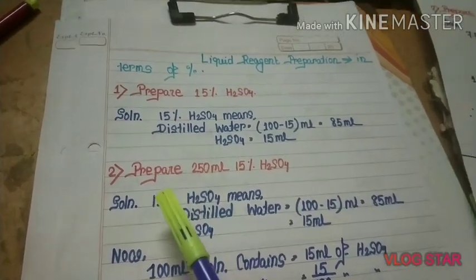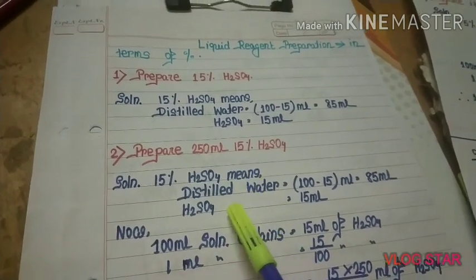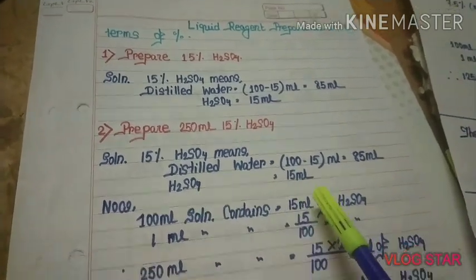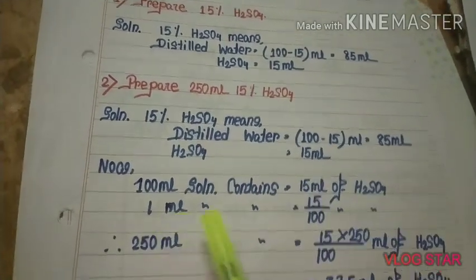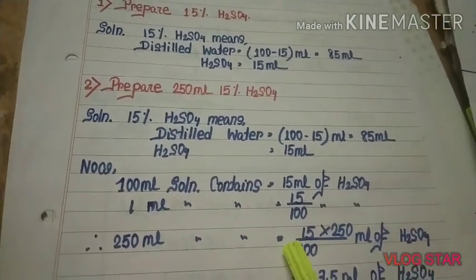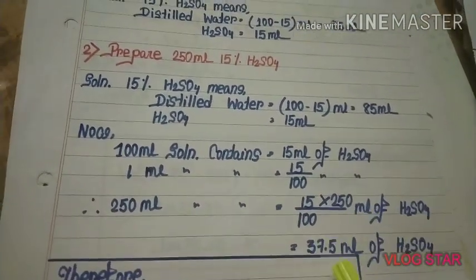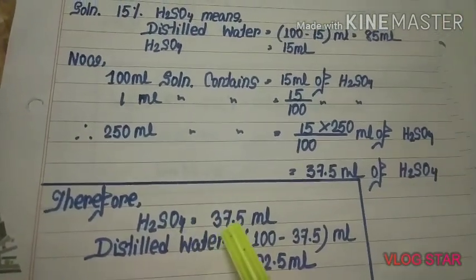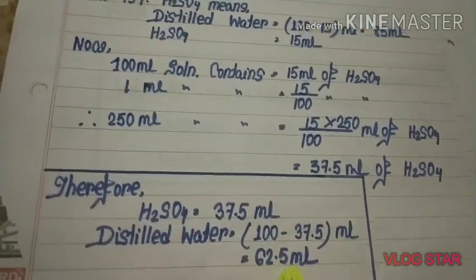Prepare 250 ml of 15% H₂SO₄. 15% H₂SO₄ means distilled water = 85 ml, H₂SO₄ = 15 ml per 100 ml solution. 1 ml solution contains 15/100 ml H₂SO₄. 250 ml solution contains (15 × 250)/100 = 37.5 ml H₂SO₄. Therefore: H₂SO₄ = 37.5 ml, distilled water = (100 − 37.5) = 62.5 ml.